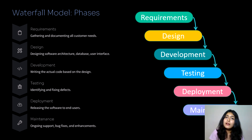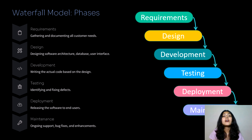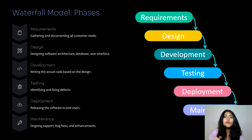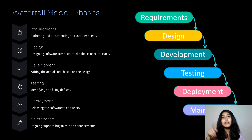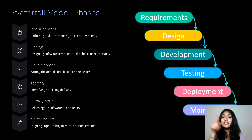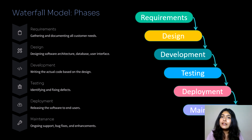After writing the code, you run and test it. If there are no bugs or errors, it moves on to the next step. If there are any bugs or errors, it does not move on — it is considered a failure, because the model does not loop back or go up. It strictly follows a top-down approach.